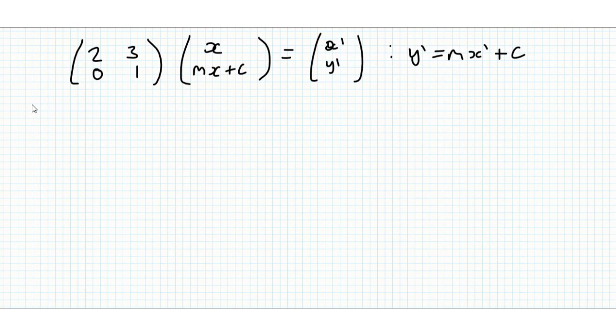So we're going to multiply this out, we get 2x plus 3 mx plus c is equal to x prime and then we get 0 times x plus mx plus c is equal to y prime.